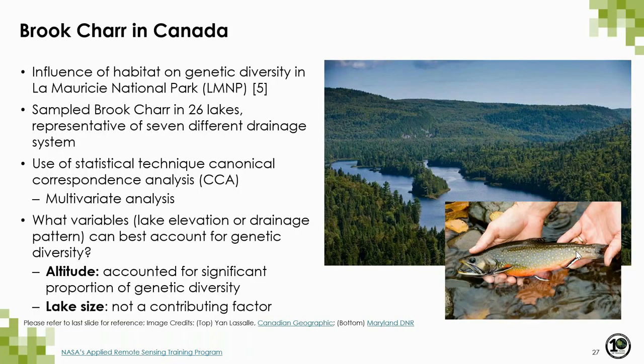The next example focused on the genetic diversity of brook char, a fish species, within La Maurice National Park in Canada. The team sampled 26 lakes with varying drainage systems and used multivariate analysis to assess landscape features and their correlation to genetic diversity. They found that the altitude of the lakes was a dominant factor in the diversity of the species, while the size of the lake was not as large a contributing factor. Please reference the paper linked here for more information.